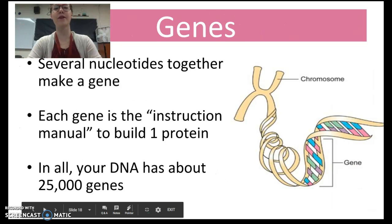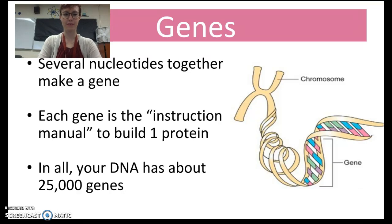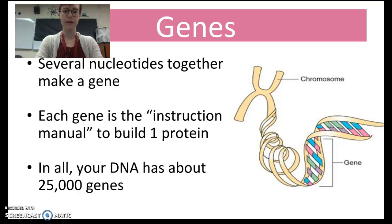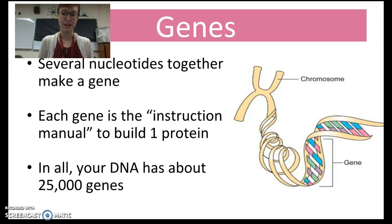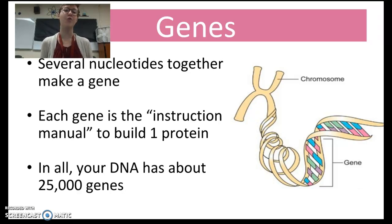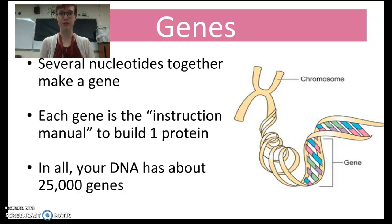Now we're going to move forward to talking about genes. Genes are just several nucleotides together. One gene is the instruction manual to build one protein. In all, your DNA has about 25,000 genes, so your DNA can make tons and tons of proteins you need to survive. This is why we call your DNA an instruction manual to build proteins.